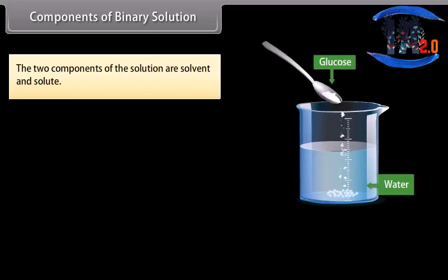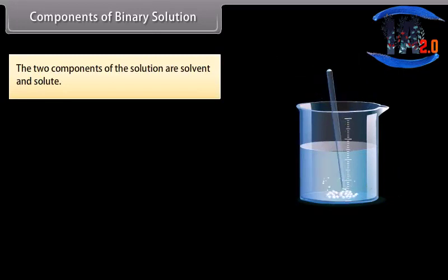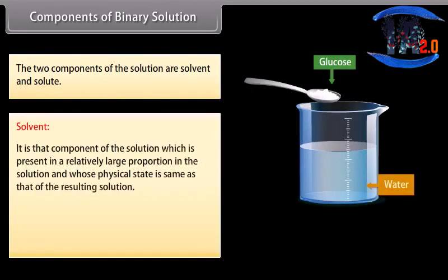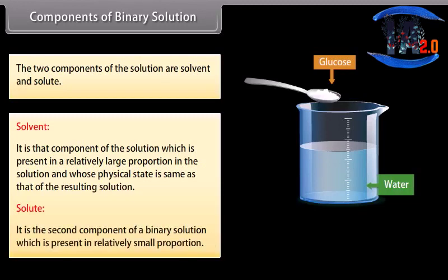The two components of the binary solution are solvent and solute. Solvent is that component of the solution which is present in a relatively large proportion in the solution and whose physical state is same as that of the resulting solution. Solute is the second component of a binary solution which is present in a relatively small proportion.